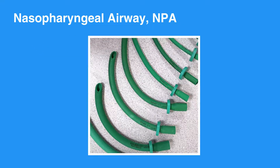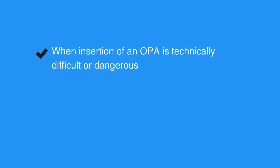The nasopharyngeal airway, or NPA, is a soft rubber or plastic uncuffed tube that provides a conduit for airflow between the nares and the pharynx. The NPA is used as an alternative to an OPA in individuals who need a basic airway adjunct. Unlike the oral airway, NPAs may be used in conscious or semi-conscious individuals with intact cough and gag reflex. Use NPA when insertion of an OPA is technically difficult or dangerous.